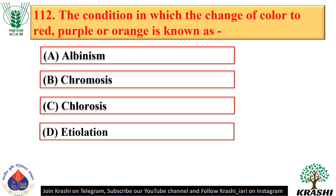Question number 112. The condition in which there is a change of colour to red, purple, or orange is known as chromosis.